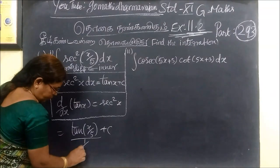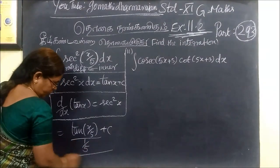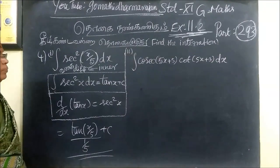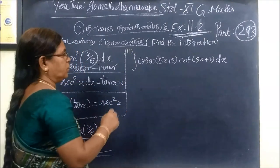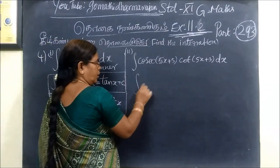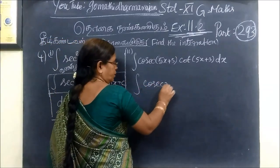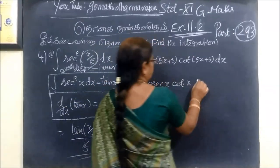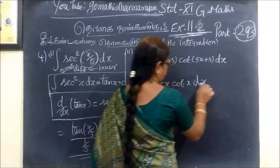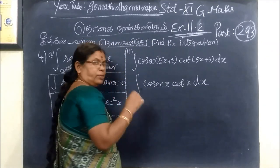So, here we are writing 1 by 5. What is this? Question number 2. This is integral of cosecant x cot x dx. This is the differentiation.